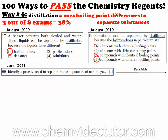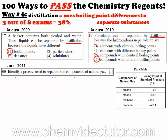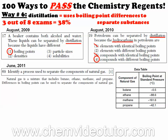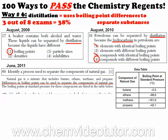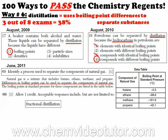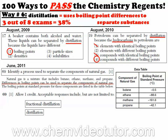Aside from a chart showing substances with different boiling points, they even gave the answer away in the passage. So if you see differences in boiling points, think distillation. And if you see distillation, think boiling point differences.